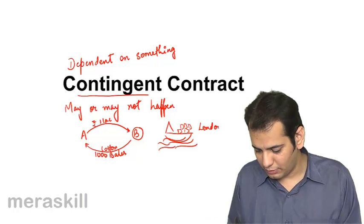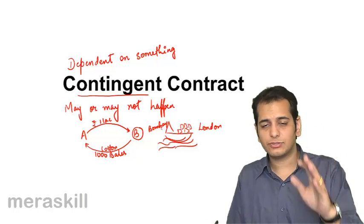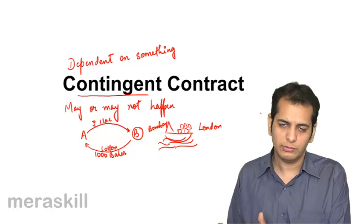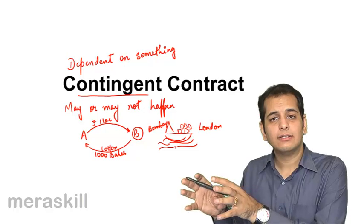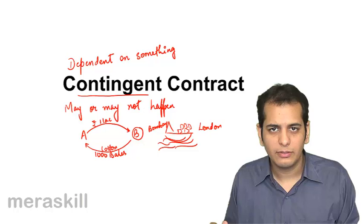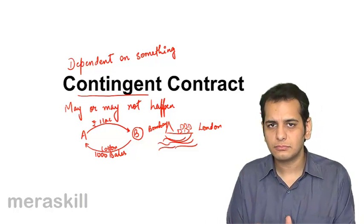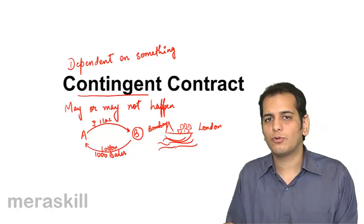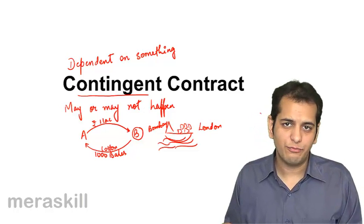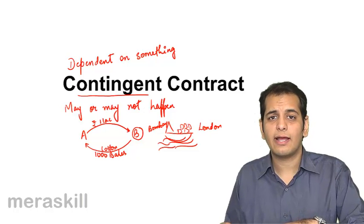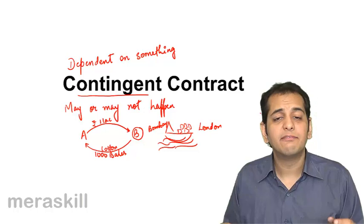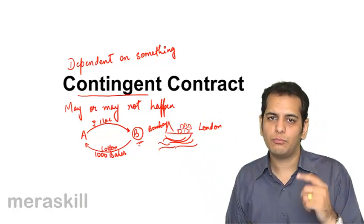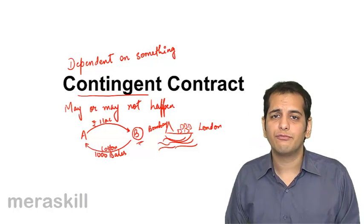Now, this ship has left from London and is yet to reach Bombay. What is happening in this contract is: till the time this condition was not involved — till the time B did not say the cotton is in a ship coming from London to Bombay — the contract was okay, a perfect normal contract. But now there is a condition attached: if the ship reaches the port of Bombay, the contract will be performed. So this contract does not become valid when it is made; it will become valid only when the ship reaches the port of Bombay, and only then will B be required to perform the contract.